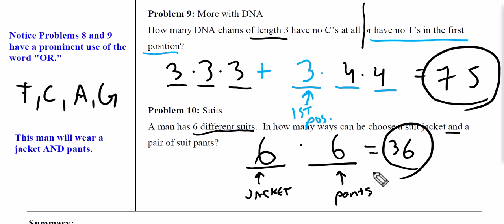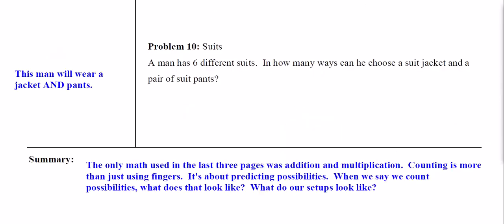How does this apply in everyday life? If you have six different outfits, you actually have 36 different outfit combinations — so instead of one week of unique clothing you could have four or five weeks of unique combinations. The only math we've really done across these examples is addition and multiplication, but we're not writing down all possible outcomes because some numbers are overwhelming. When we talk about counting, we're talking about predicting possibilities.